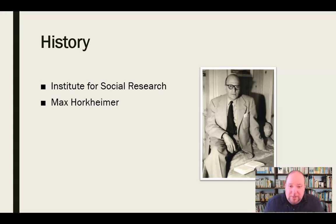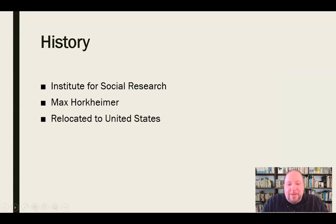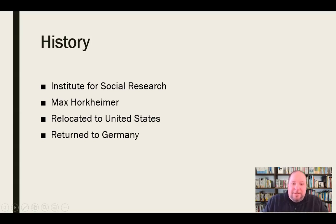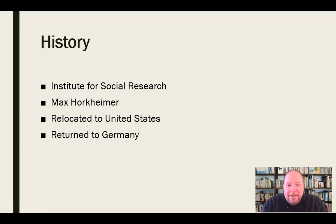They were in the United States for quite a few years. Then in 1951, after the end of World War II and after Germany had a chance to settle down, they actually returned to Frankfurt. So after relocating to the United States, they eventually returned to Germany in 1951. The Institute for Social Research is located again in Frankfurt today. That's why it's called the Frankfurt School — it's where it was founded and developed, and even though it has strong roots in the United States, it was relocated back to Germany in 1951.